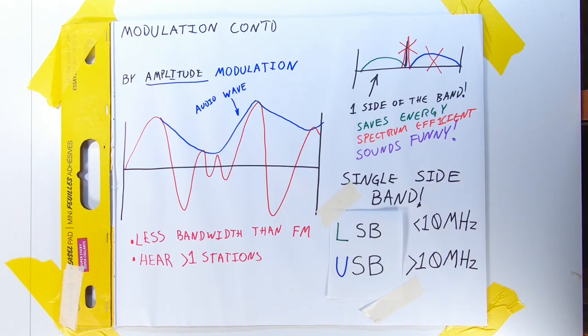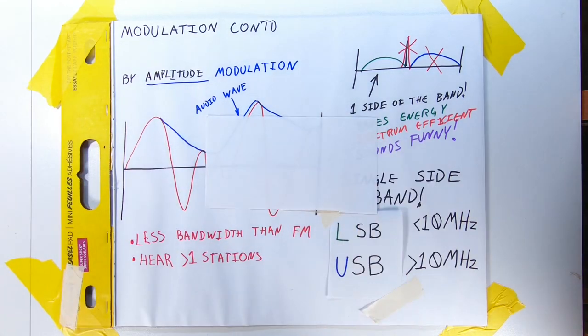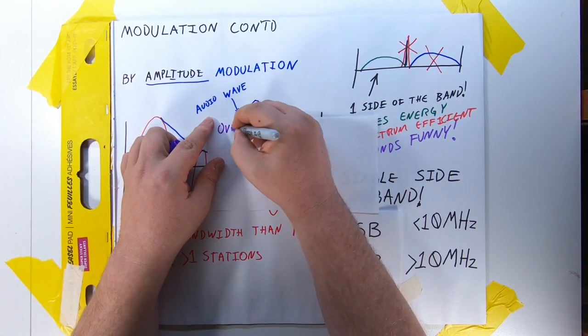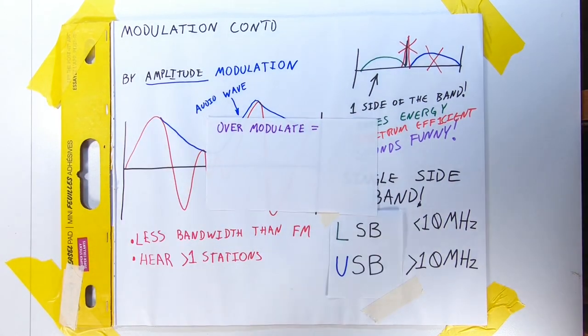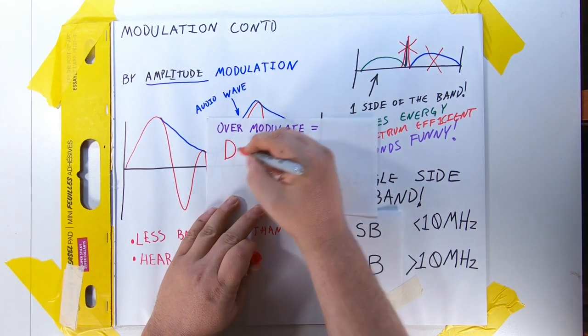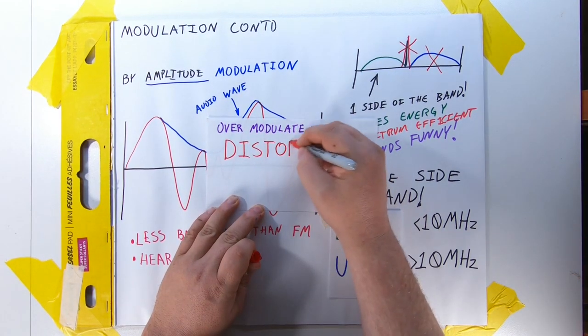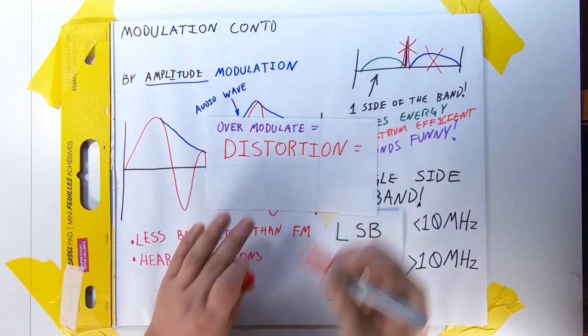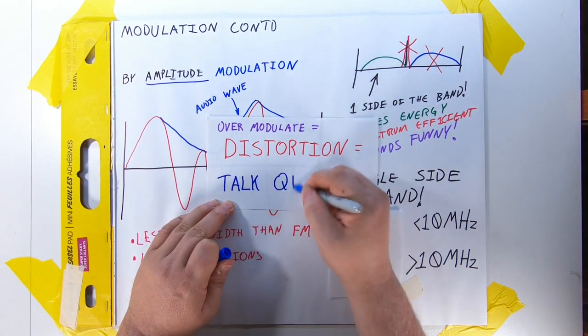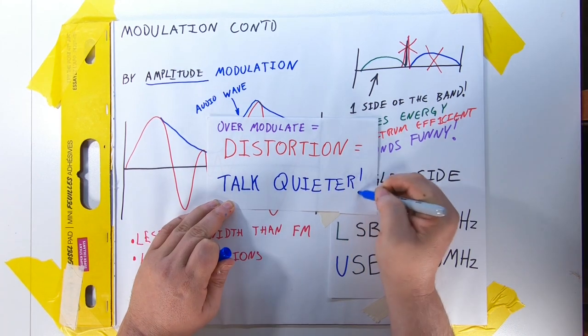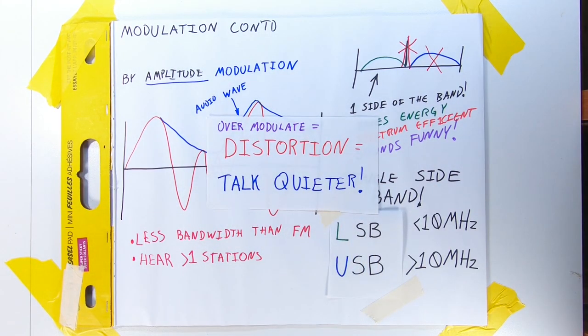Sometimes one can modulate too much, and unsurprisingly, we call this overmodulation. While it will work differently and have different effects depending on what kind of radio and mode you're using, fixing it is almost always the same and pretty simple. Talk quieter and people can hear you better. If your radio has a mic gain knob, turn it down. Otherwise, back off on the microphone. Let the radio do the yelling part.